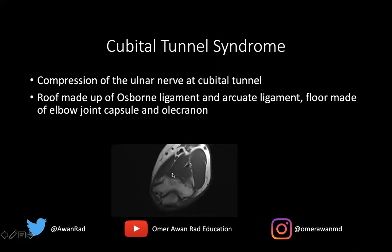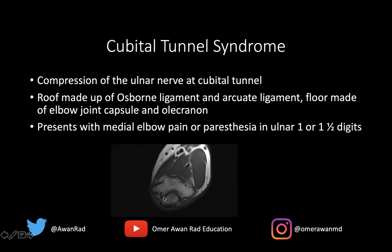Also the arcuate ligament, which is a ligament that runs between the humeral and ulnar heads of the flexor carpi ulnaris muscle. The floor is made up of the elbow joint capsule and the olecranon right here. So this is the space we're talking about — the cubital tunnel.